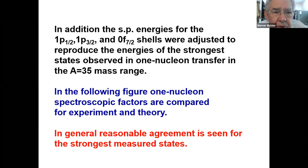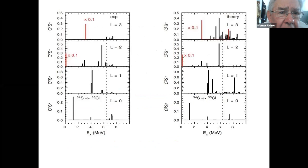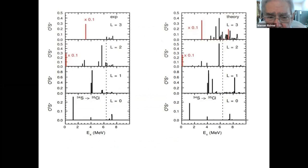We found that we had to adjust the energies of the strongest states in one-nucleon transfer to get reasonable agreement with measured spectroscopic factors. We get pretty reasonable agreement. On the left we have experiment and on the right theory — above the threshold there's not much measured for the experiment. But you can see that the theory at least reproduces some of the strongest states sub-threshold, which gives us some confidence that we are on the right track.